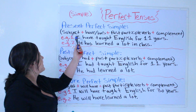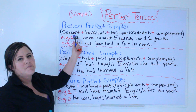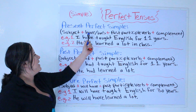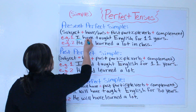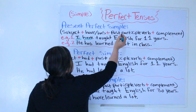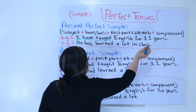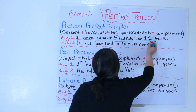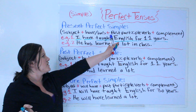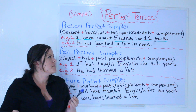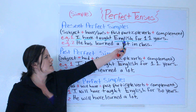So the first one we have on the board is the present perfect simple, which is subject — like I — have or has. Here we have: subject I, have, past participle verb taught, complement — English for 11 years — which could be an object and complement. So we have: subject, have, past participle, and complement.